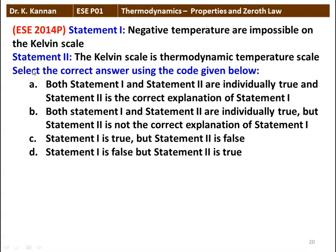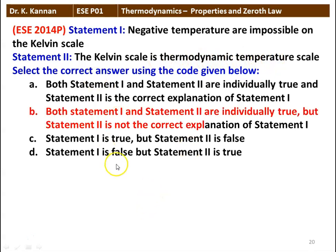Next question, two statements. Statement 1: negative temperatures are impossible in the Kelvin scale. Statement 2: Kelvin scale is a thermodynamic temperature scale. Both statements are individually true, but statement 2 is not the correct explanation for statement 1. Negative temperature is not possible in the Kelvin scale, and the Kelvin scale is the thermodynamic temperature scale.